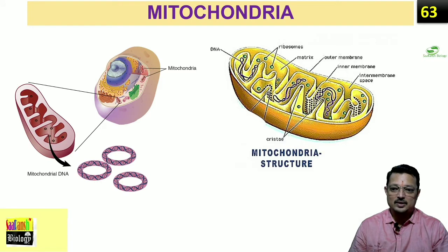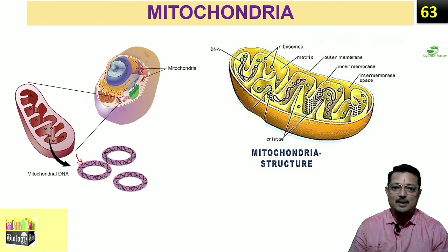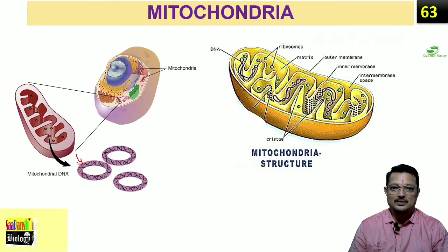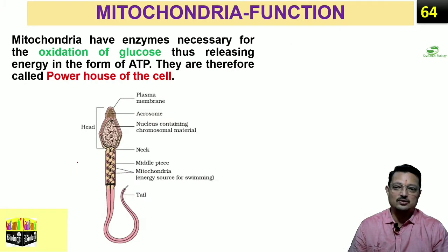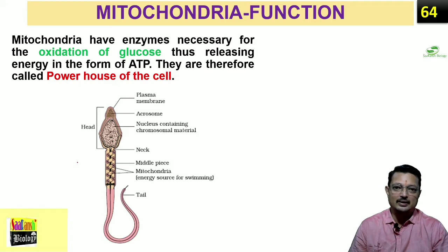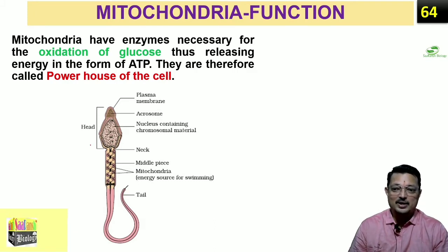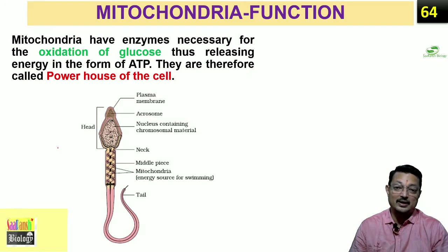Structurally, mitochondria has a double membrane — an outer membrane and an inner membrane — with the space between them called the intermembrane space. Regarding function: mitochondria contains many enzymes that help in the breakdown of glucose. Glucose breakdown starts in the cytoplasm — that is called glycolysis. After glycolysis, glucose is converted into pyruvic acid, which then enters the mitochondria, where more energy is produced in the Krebs Cycle.